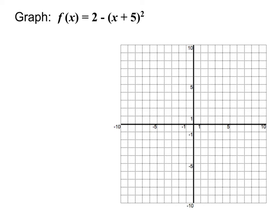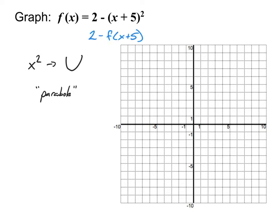First of all, we need to know that the basic graph of x squared is a parabola — that U-shaped graph which either opens up or opens down, depending on the equation and what transformations are being applied. That's our basic parent function. Previously, we've graphed these using function notation, which would look like 2 minus f of x plus 5. The 2 out front is positive, and writing it as a plus 2 means the same thing — that's the bridge that makes it easier to graph.